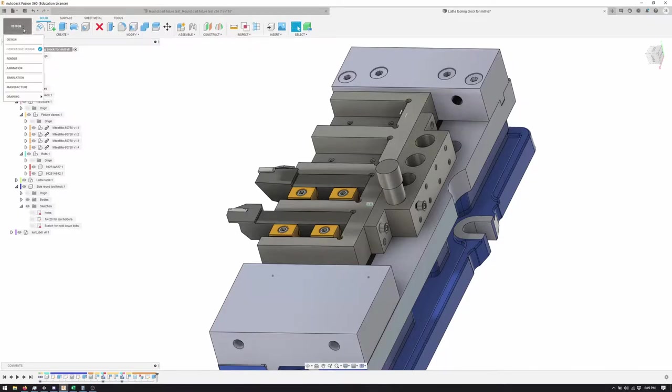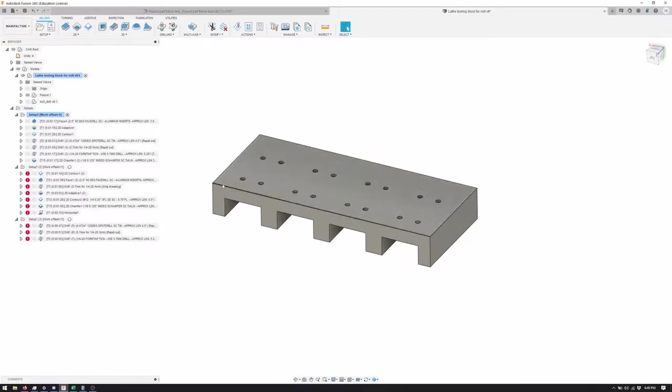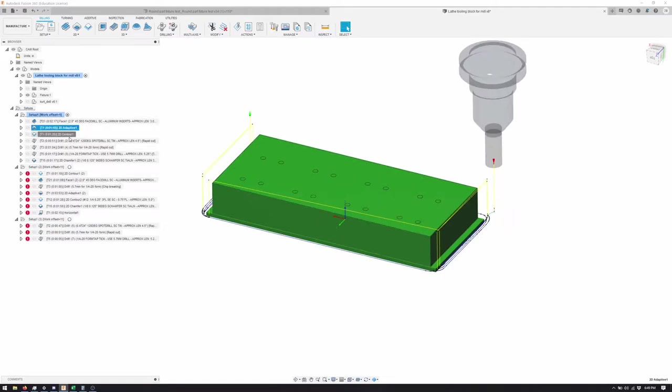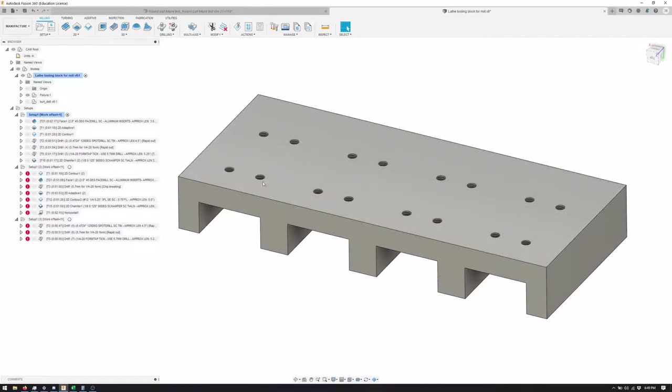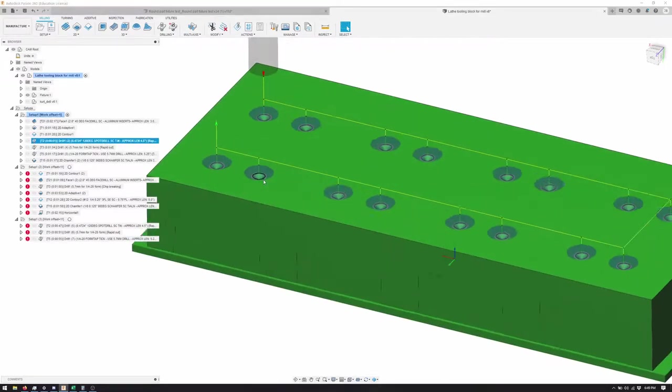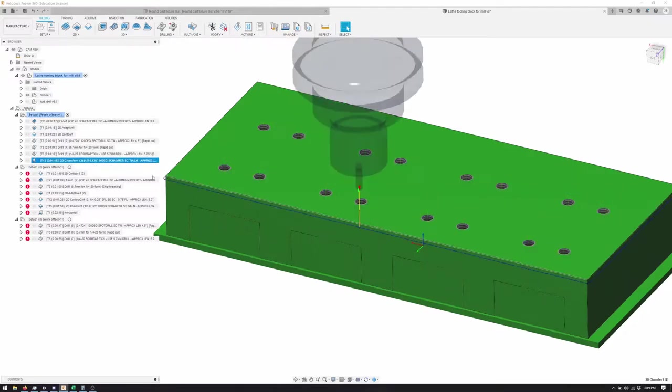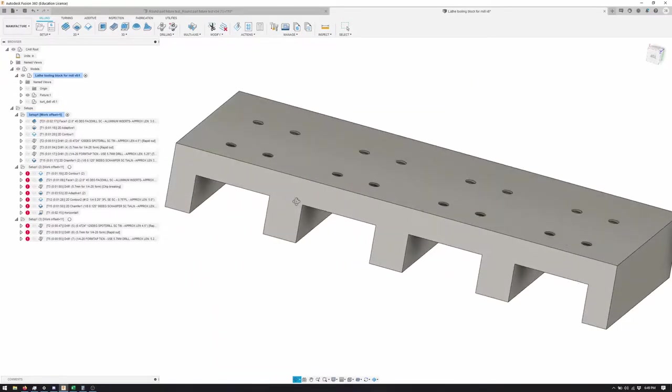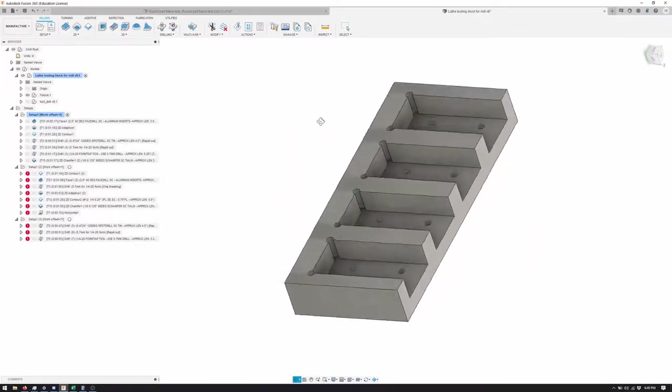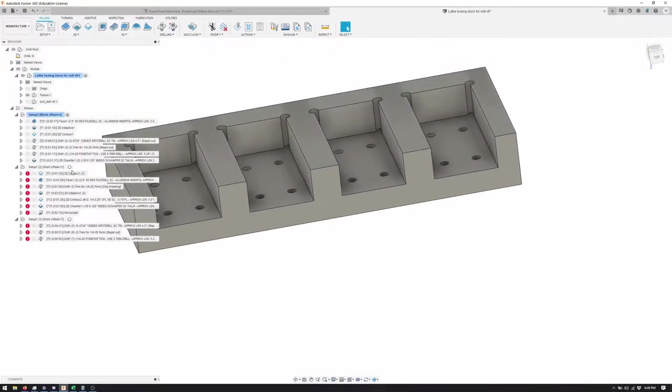And yeah, so the CAM side of it is we're starting with the back side and we're going to face, adaptive round, contour round, spot drill. Only spot drilling because sometimes when you form tap it'll like bring the threads up over, like squeeze them out. So I'll spot drill to make sure it doesn't do that. Drill, form tap because those are superior, and then just chamfer round. And the reason I am doing the threads backwards, well it's not really backwards, but on the back side is because if I go this way, the tool is too short and the holder hits these splines. So that's a little workaround.